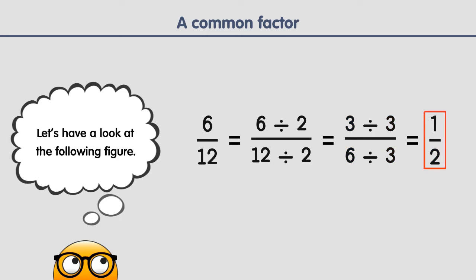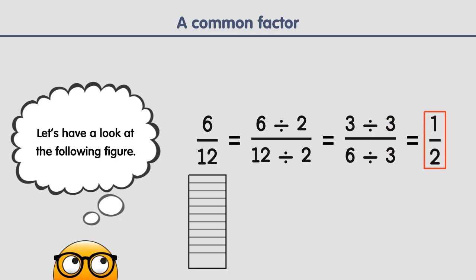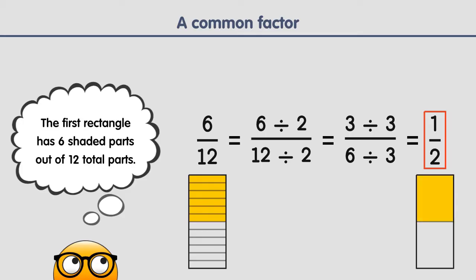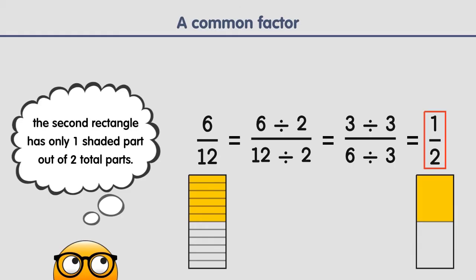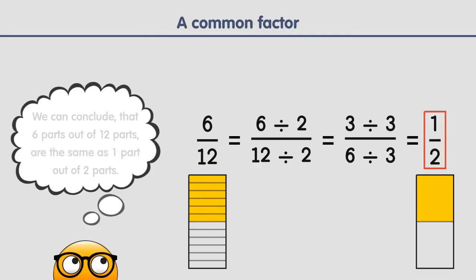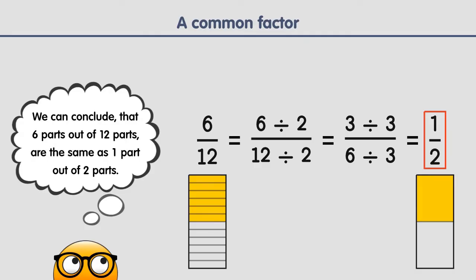Let's have a look at the following figure. The first rectangle has 6 shaded parts out of 12 total parts, whereas the second rectangle has only 1 shaded part out of 2 total parts. It's to be noted that the shaded portion is the same in both rectangles. So we can conclude that 6 parts out of 12 parts are the same as 1 part out of 2 parts.